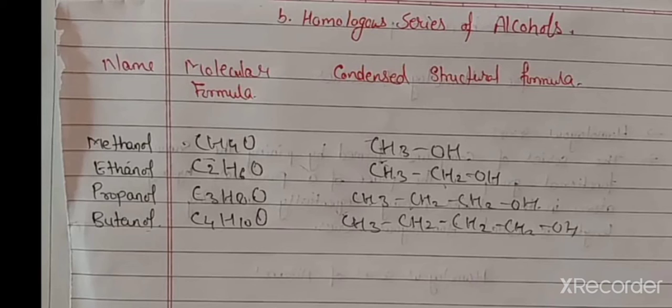Then it is known as the homologous series of alcohol. If you are adding a hydroxyl group: meth plus ol is methanol, eth plus ol is ethanol — prefix and suffix — propanol, butanol. Like this, you have to add.